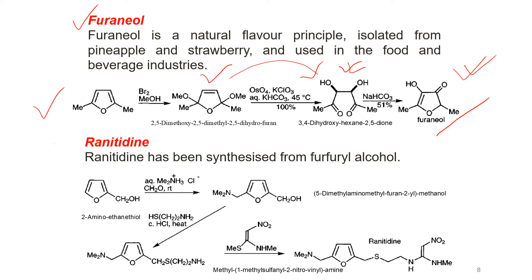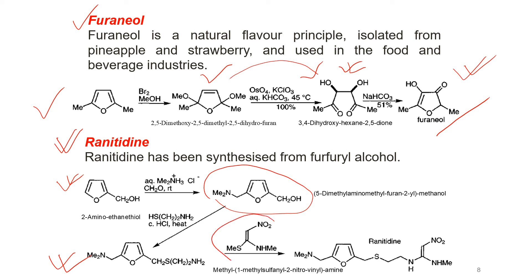The second pharmaceutically important compound is ranitidine, which can be synthesized from furfuryl alcohol. When furfuryl alcohol reacts with dimethylammonium chloride and formaldehyde, an intermediate is produced. That intermediate reacts with 2-aminoethanethiol to give another product, which then reacts with methyl 1-methylsulfonyl-2-nitrovinyl amine to produce ranitidine — a pharmaceutically important compound.